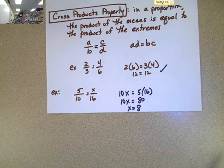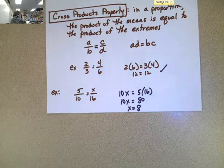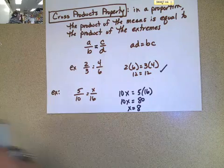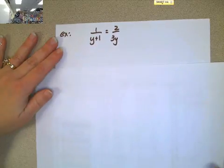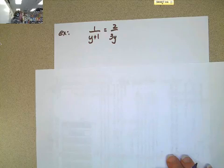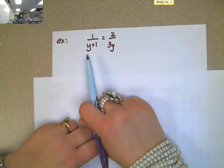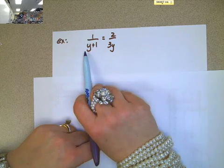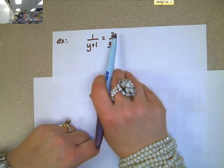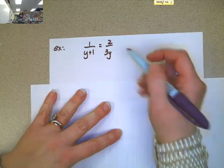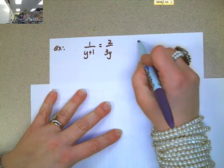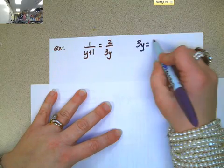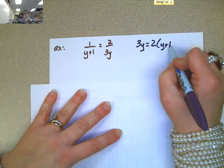They get more involved, of course. And so, here's another example. So, in this case, we have a binomial involved. So, we have 1 to Y plus 1 is equal to 2 to 3Y. And so, we're going to do 1 times 3Y is equal to 2 times Y plus 1.